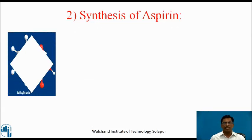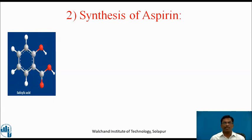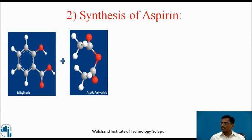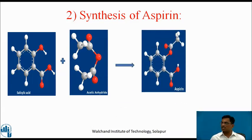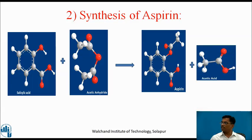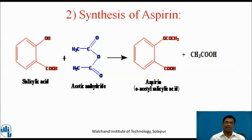This can be explained with a graphical presentation: salicylic acid, when treated with acetic anhydride, gives us aspirin, but along with this, acetic acid is also formed. This is the reaction explaining the formation of the aspirin molecule.